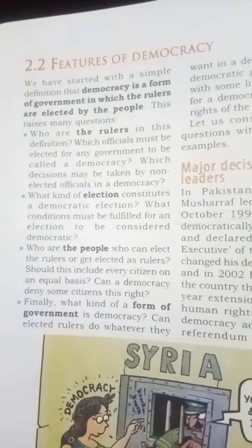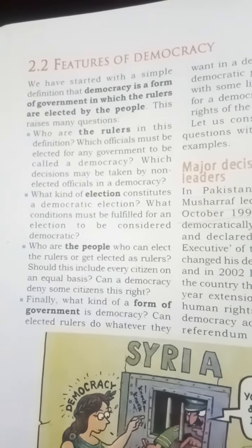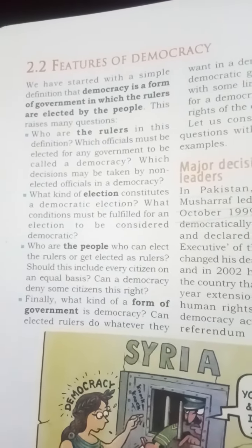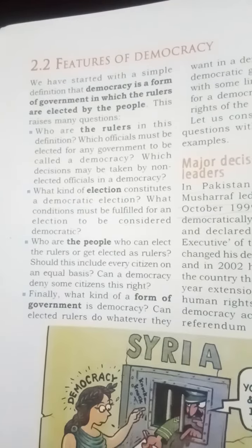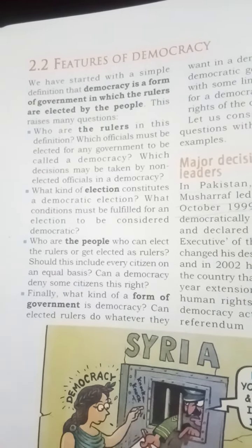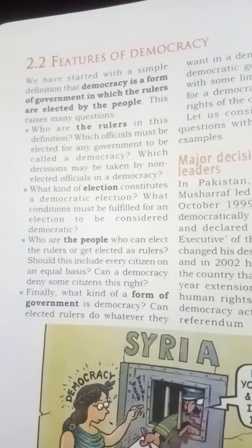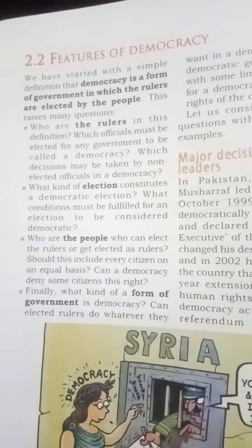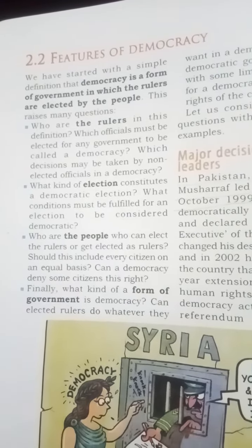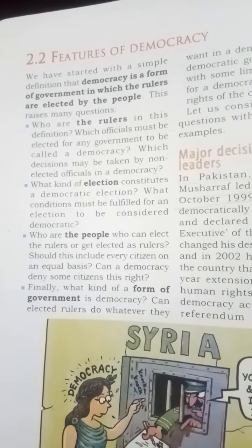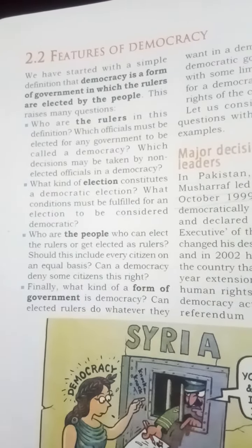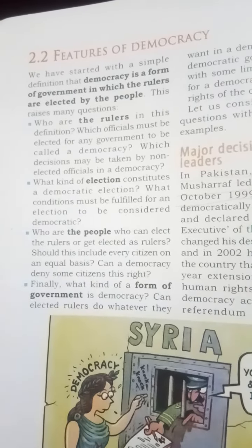This raises many questions: Who are the rulers in this definition? Which officials must be elected for any government to be called a democracy? Which decisions may be taken by non-elected officials in a democracy? What kind of election constitutes a democratic election? What conditions must be fulfilled for an election to be considered democratic? Who are the people who can elect the rulers or get elected as rulers?